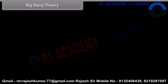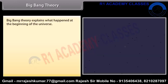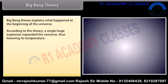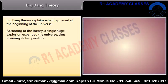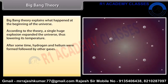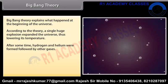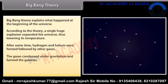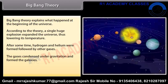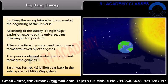Big Bang Theory explains what happened at the beginning of the universe. According to the theory, a single huge explosion expanded the universe, thus lowering its temperature. After some time, hydrogen and helium were formed, followed by other gases. The gases condensed under gravitation and formed the galaxies. Earth was formed 4.5 billion years back in the solar system of the Milky Way Galaxy.